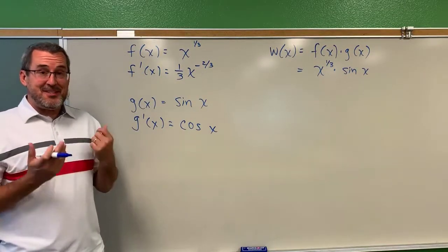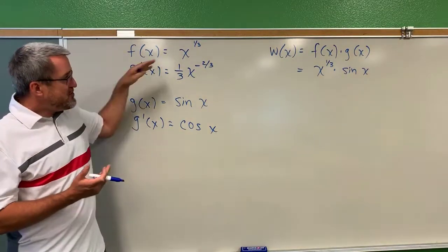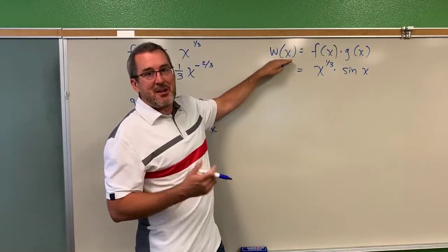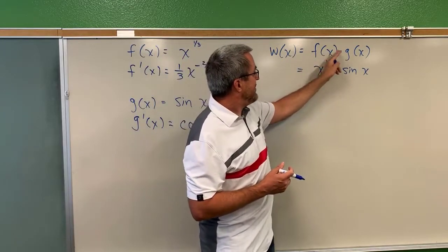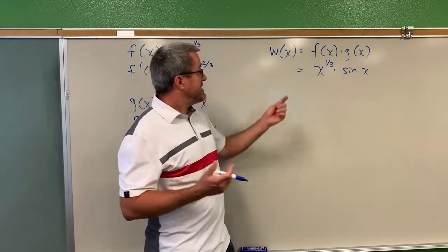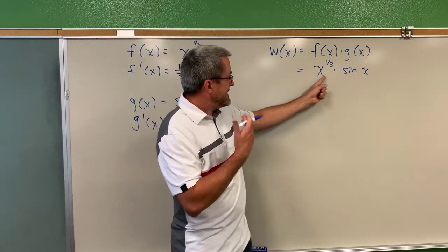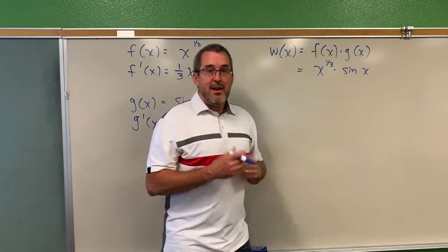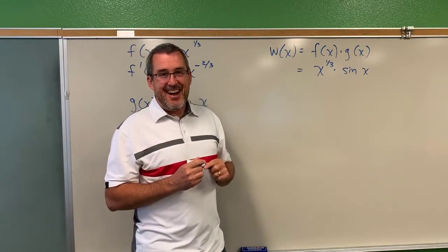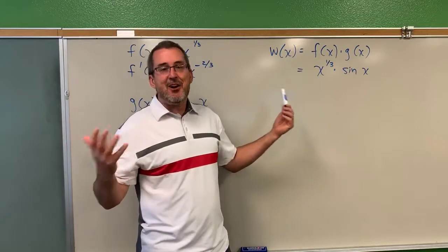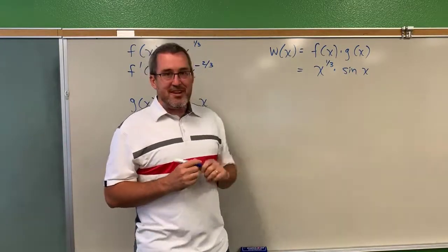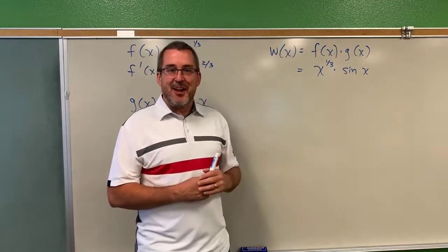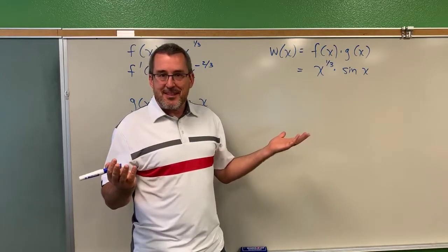But what I'd like you to think about today is not these two functions individually, but what if we define another function — I'm going to call it w of x — that happens to be the product of two functions. In this example, suppose the first function is x to the one-third and the second function is the sine of x. Pause the video and make a guess: what do you think the derivative of w of x should be? Because what we're going to explore today is why that makes sense.